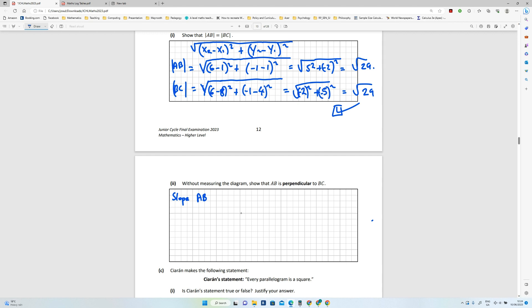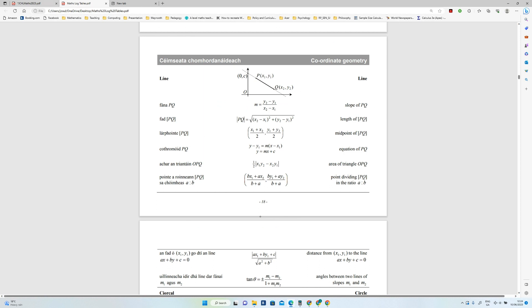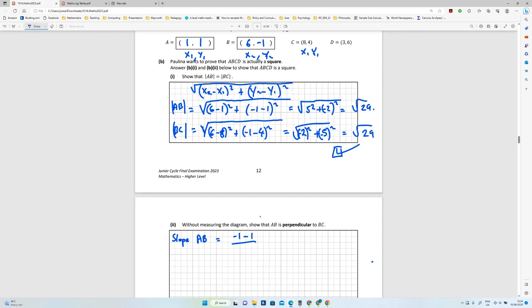So let's do it. So slope of AB first. So AB, we're going to say (-1 - 1) and we're going to say x2 is 6 minus 1. Okay, so that's going to give me minus 2 on top all over 5.